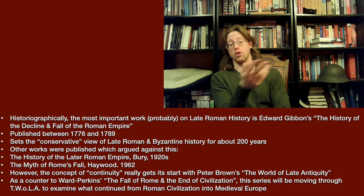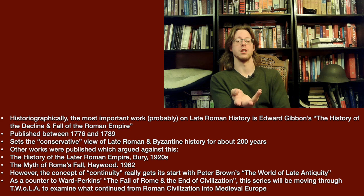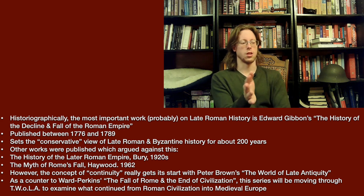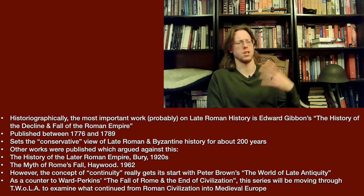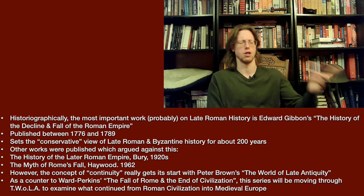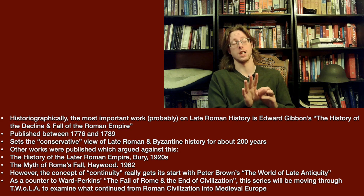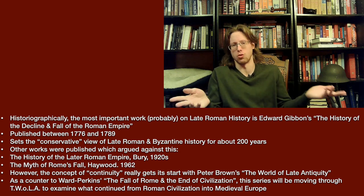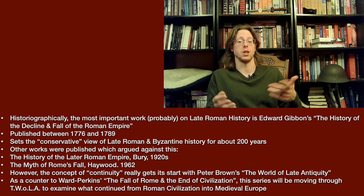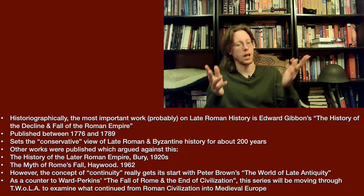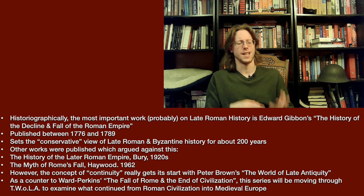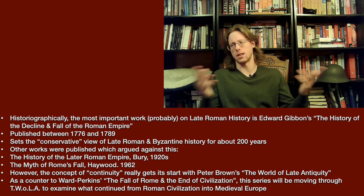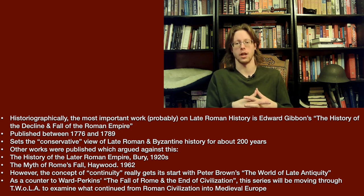Other works, however, began to push against this paradigm. In the 1920s, James Bagnell Bury publishes two books on the history of the later Roman Empire, which have more of an Eastern focus, more of an Eastern Mediterranean theme. But part of it still goes into this whole idea of decline and fall. You have The Myth of Rome's Fall in 1962 by a scholar named Haywood. By that title, what we're kind of grappling with at this point — because stuff like archaeology has advanced — is the idea that maybe there was some destruction, maybe it was kind of bad, but there was also a lot of continuity.